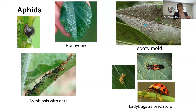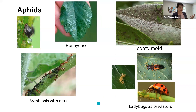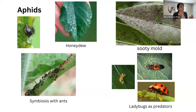Sooty mold does not penetrate the plant tissue, but it blocks sunlight, so it can reduce growth. I wanted to highlight ladybugs because they really like aphids. If you see the adult or the larvae — shown in this picture — protect them. And also if you see the eggs, which are very bright and oval-shaped, you want those to be in your plants.